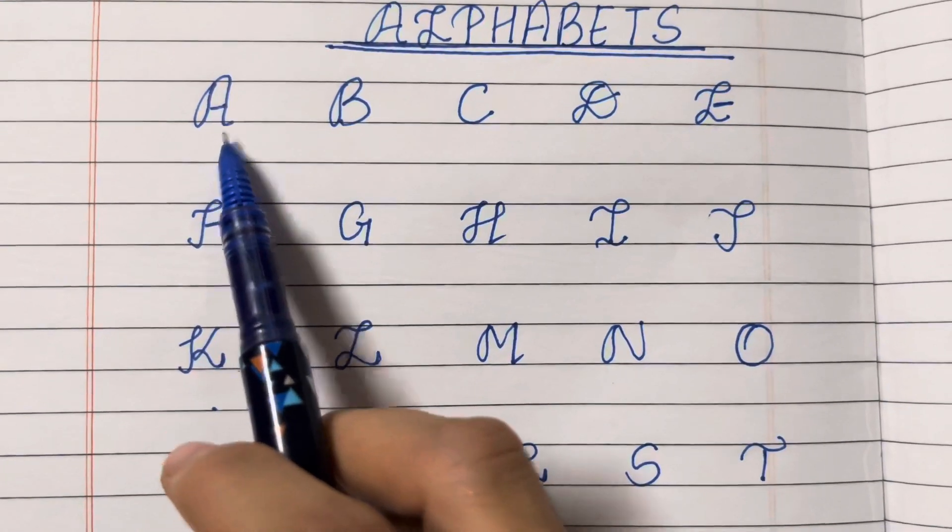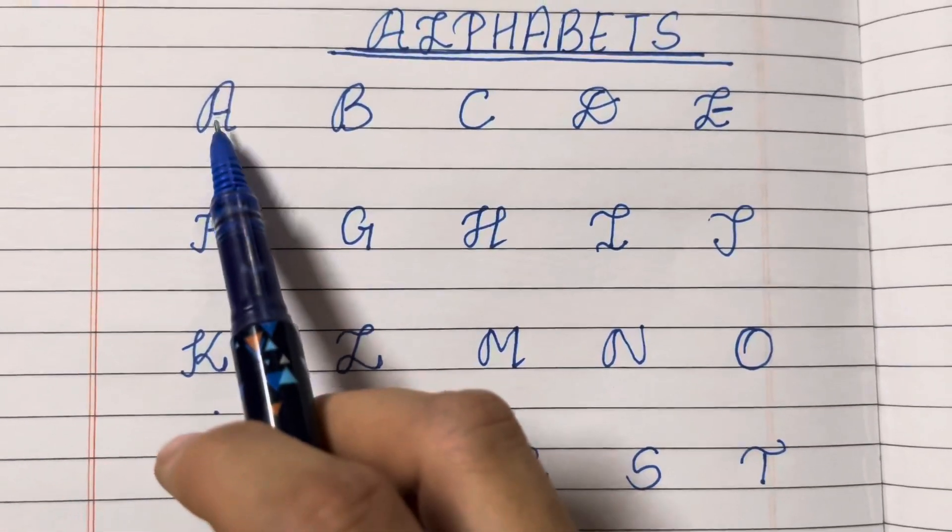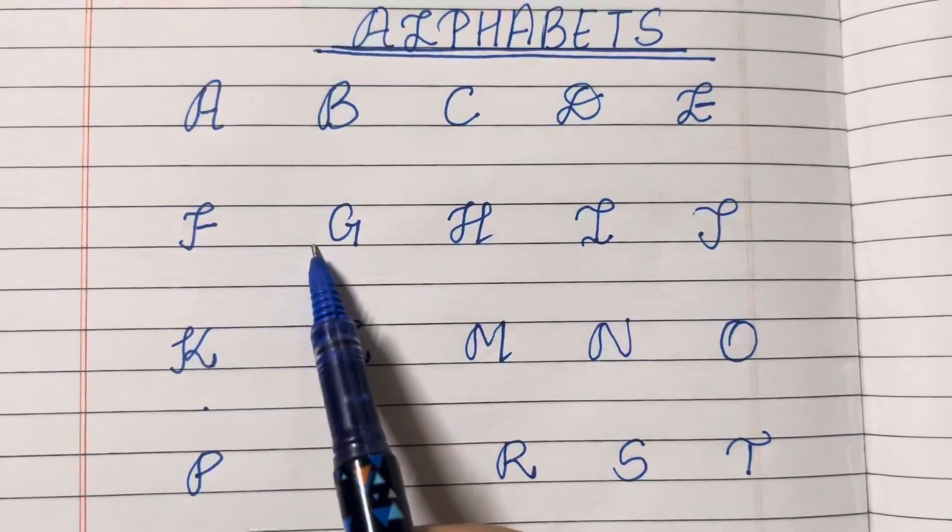So let's start. A, B, C, D, E, F, G. Repeat. A, B, C, D, E, F, G.